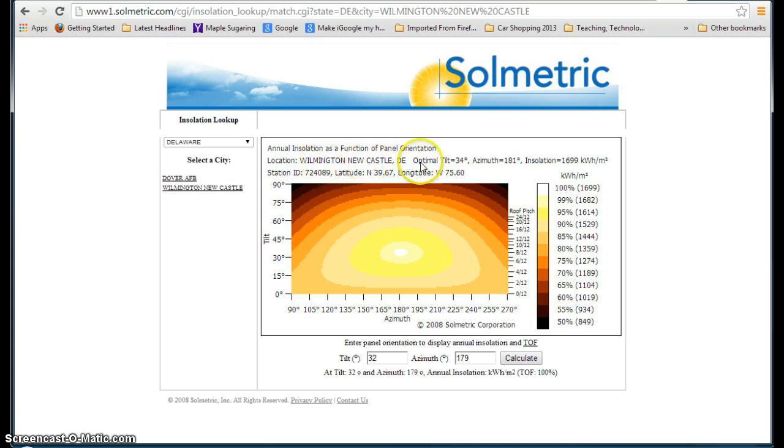So here's the location, it tells you the optimal tilt, which in this case is 34 degrees, the optimal azimuth is 181 degrees, it tells you the insolation. In this case, it's about 1700 kilowatt hours per meter squared per year. Station ID is the weather station. Then we have latitude and longitude, which should look familiar to you.